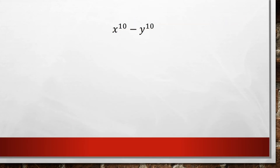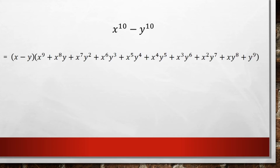If we continue this with x to the 10th minus y to the 10th, we're going to have an x minus y factor in the front. Then we're going to start with x to the 9th and work our way down to x to the 0, and y starts at y to the 0 and ends up at y to the 9th. So the second factor will be x to the 9th plus x to the 8th times y, plus x to the 7th times y squared, plus x to the 6th times y cubed, plus x to the 5th times y to the 4th, plus x to the 4th times y to the 5th, plus x cubed times y to the 6th, plus x squared times y to the 7th, plus x times y to the 8th, plus y to the 9th.